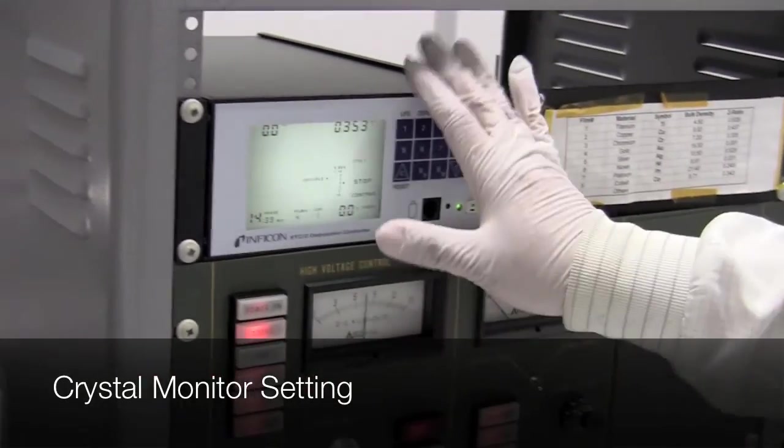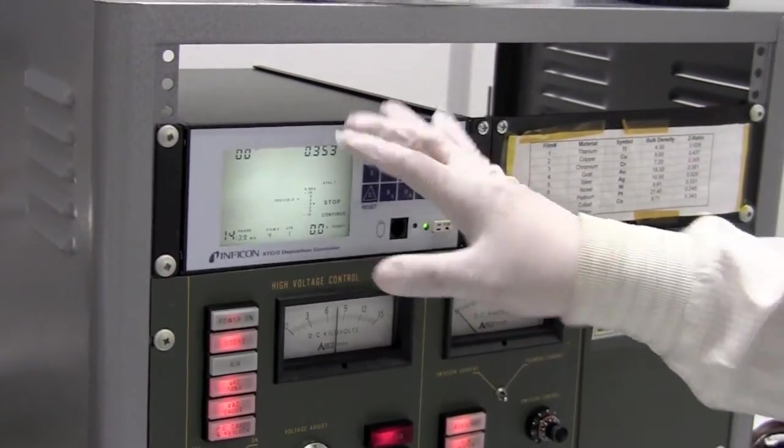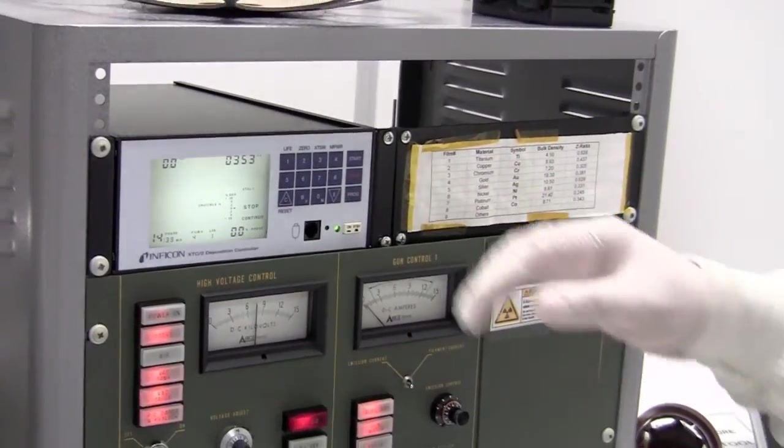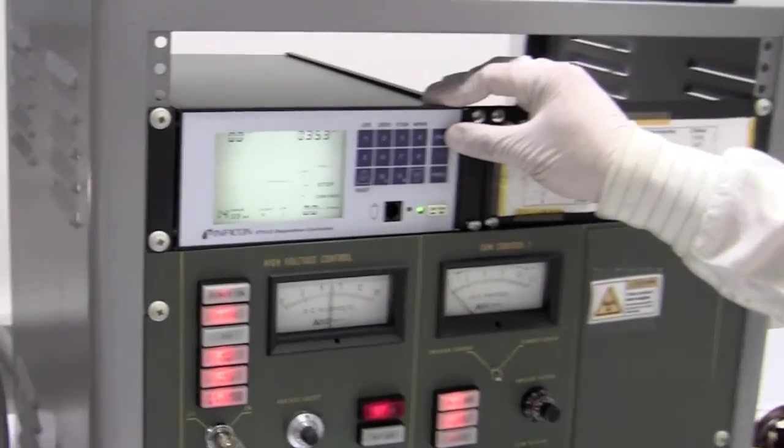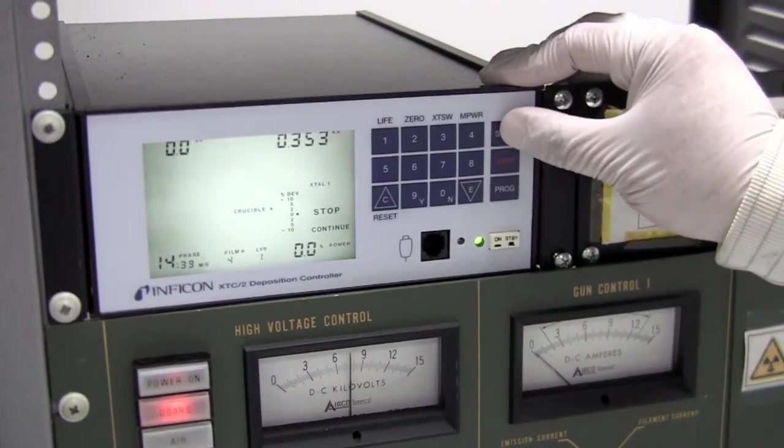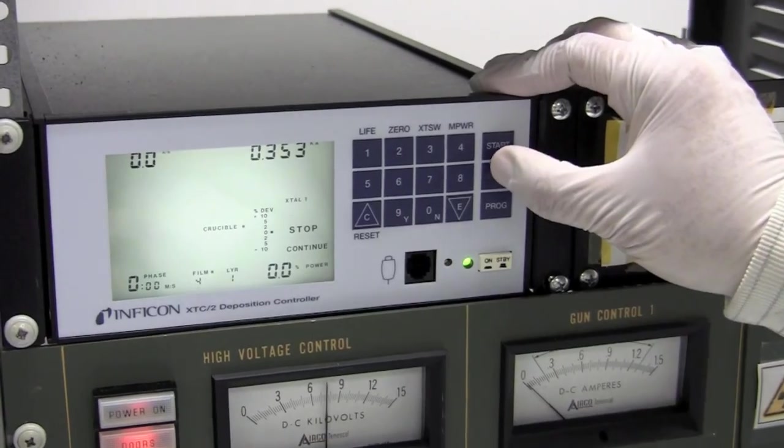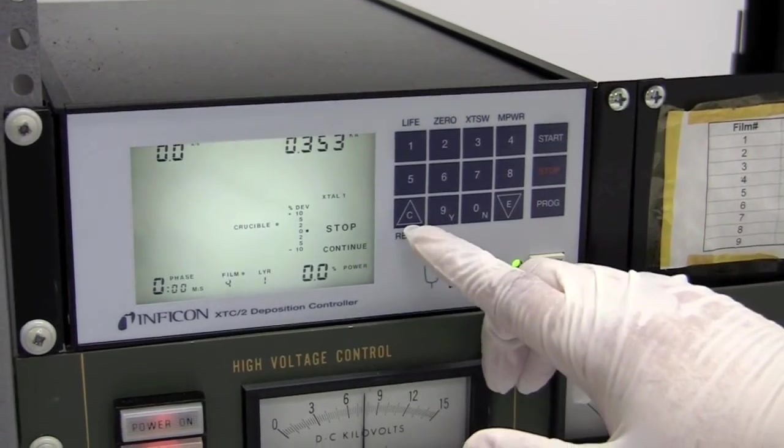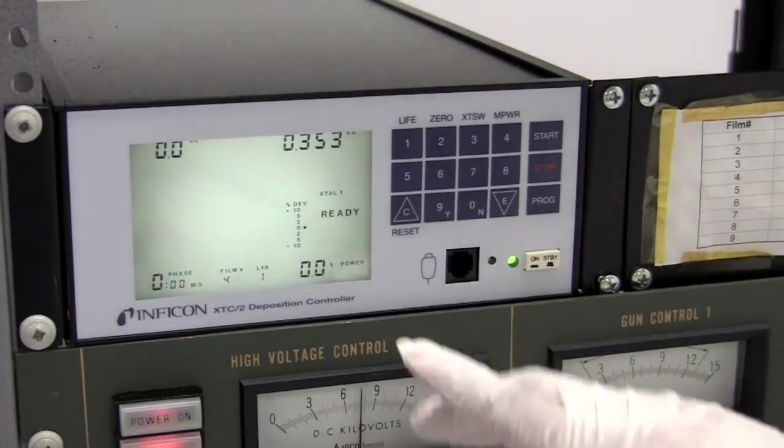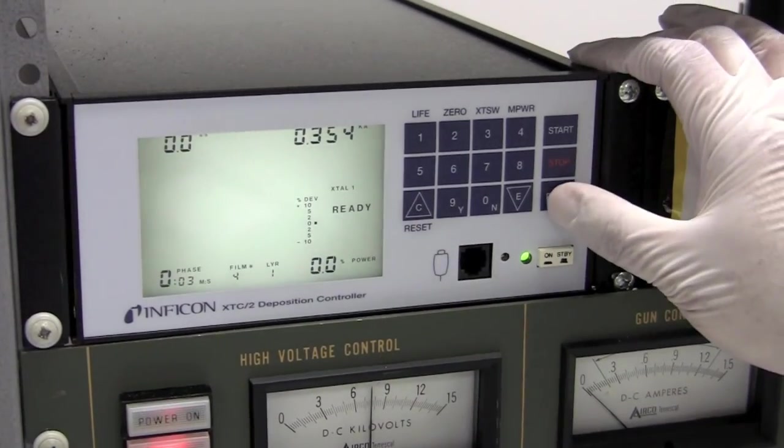So now you can program the thickness monitor. This will measure how thick of a deposition you have. First you press start, then stop, start, stop. And then you press reset. Then when it says ready, you just press the program button.